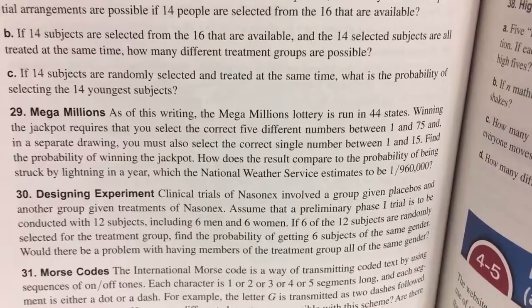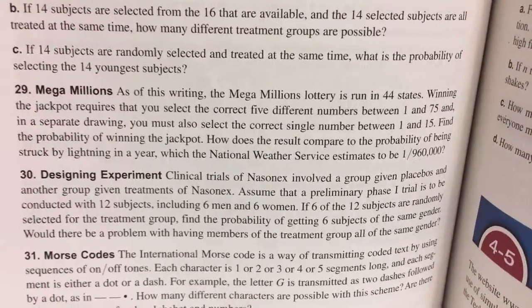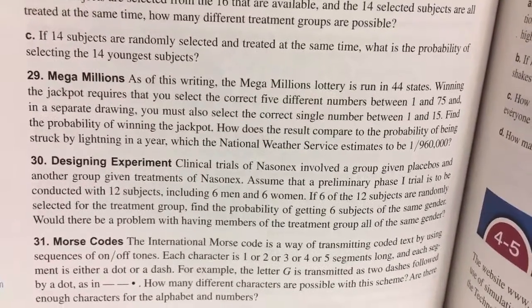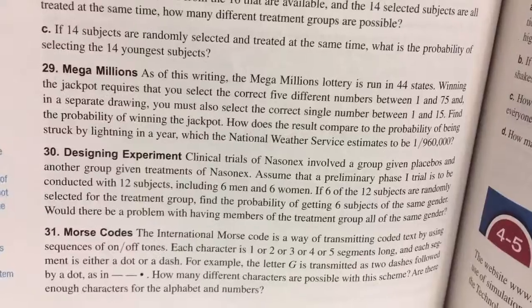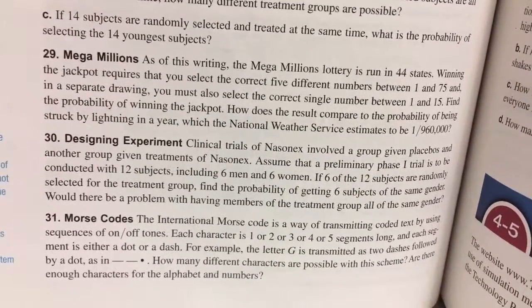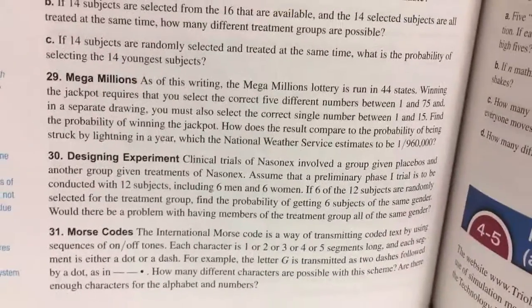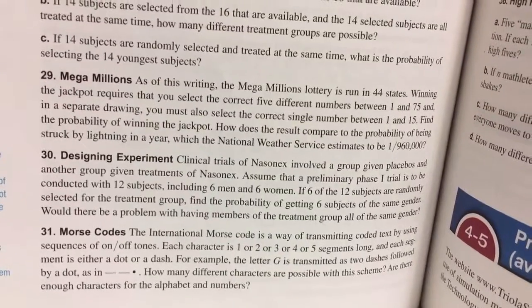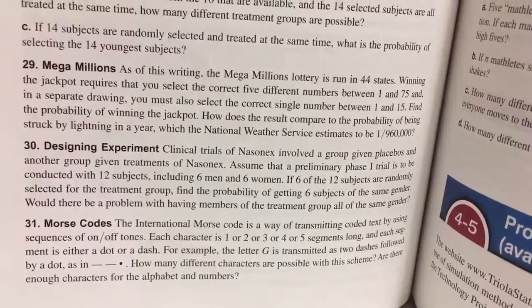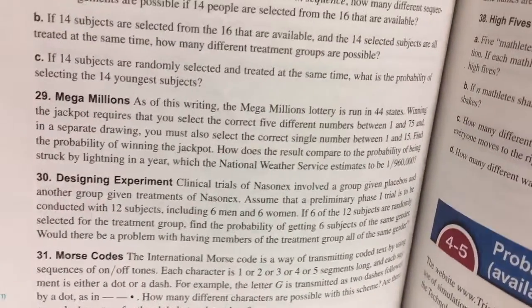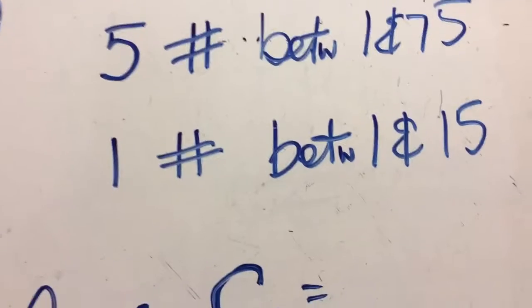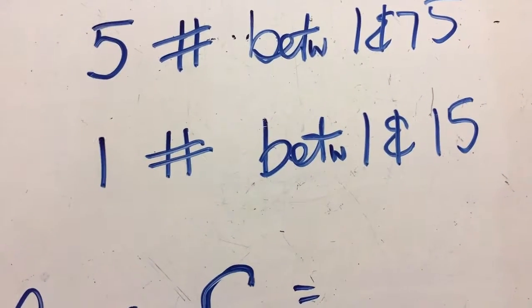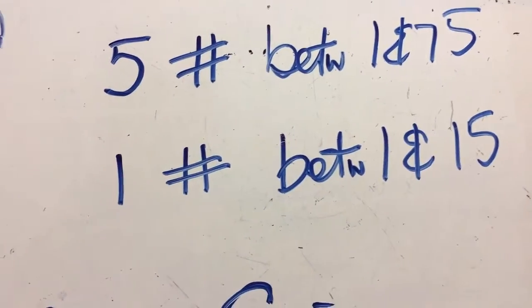Number 29 is very interesting. As of this writing, the Mega Millions Lottery is run in 44 states. Winning the jackpot requires that you select the correct five different numbers between 1 and 75, and in a separate drawing, you must also select the correct single number between 1 and 15. Find the probability of winning the jackpot. How does the result compare to the probability of being struck by lightning in a year, which the National Weather Service estimates to be 1 out of 960,000?